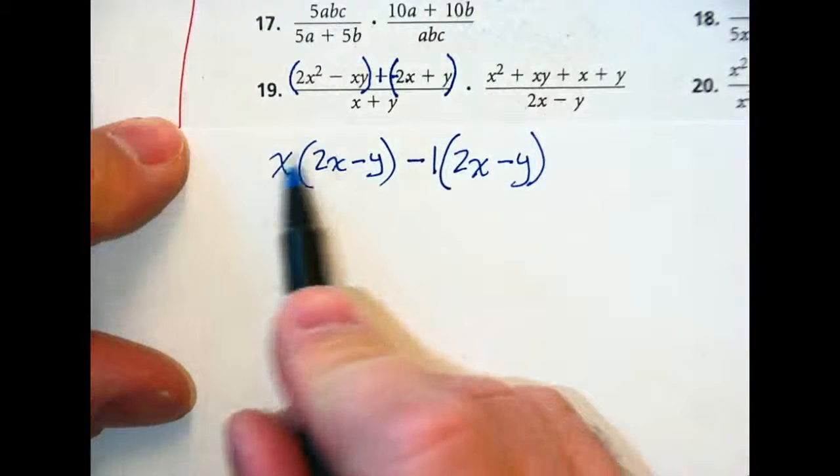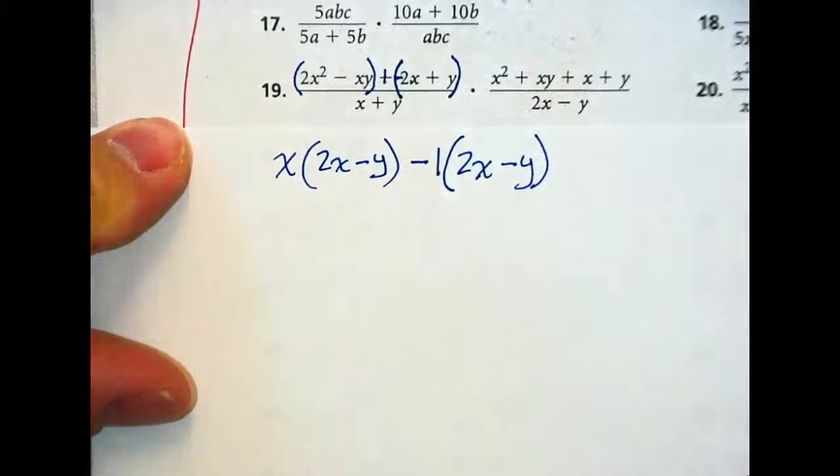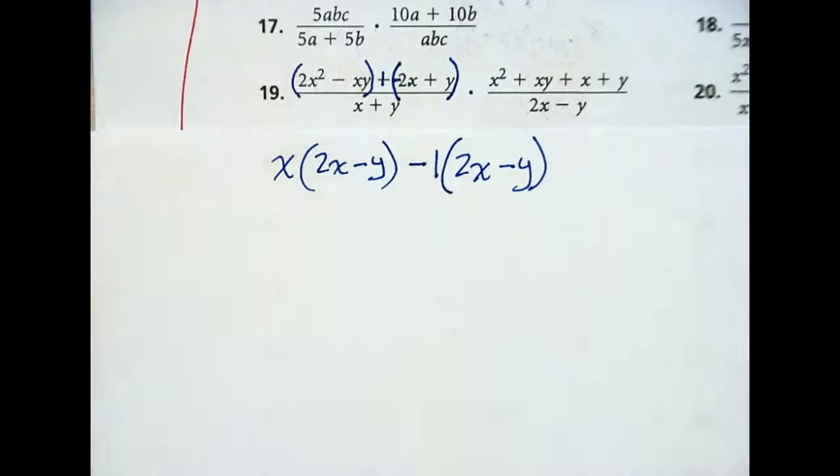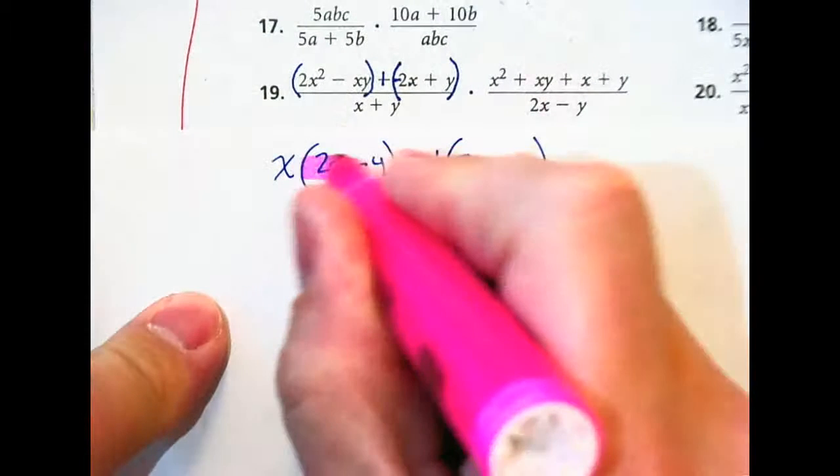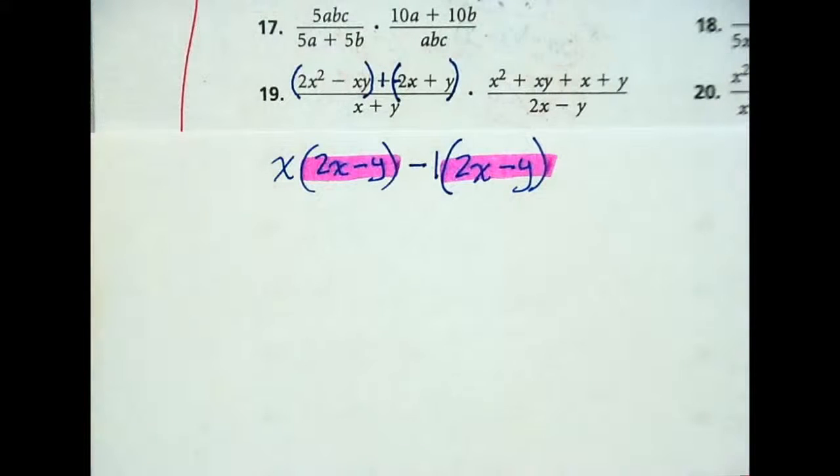Now you'll notice, is there a greatest common factor between these two? Yeah. What is it? It's 2x minus y. This is your greatest common factor. Everyone see that?